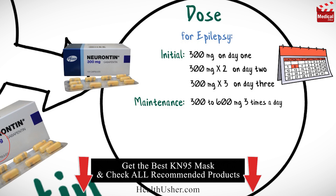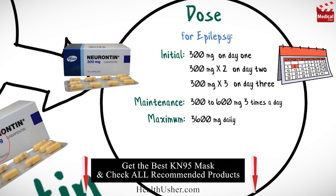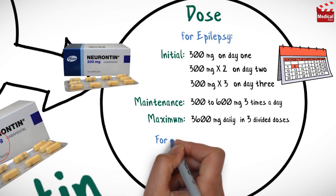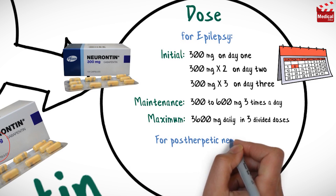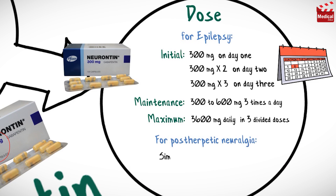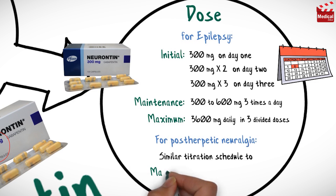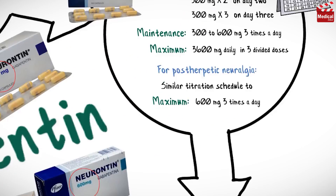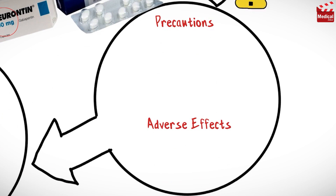The maintenance dose is 300 to 600 milligrams three times a day and the maximum dose is 3600 milligrams daily in three divided doses. For postherpetic neuralgia, use a similar titration schedule to a maximum dose of 600 milligrams three times a day.